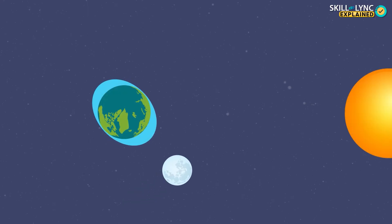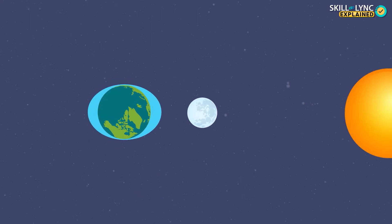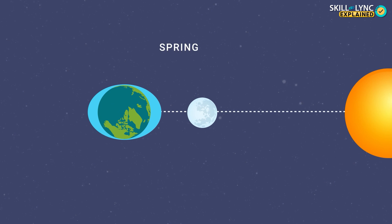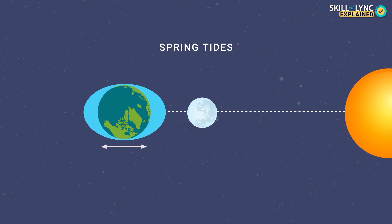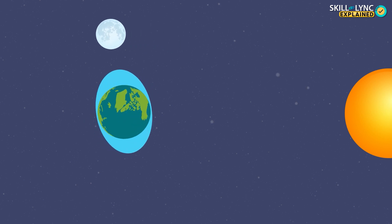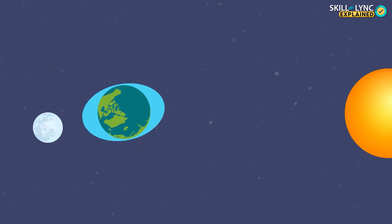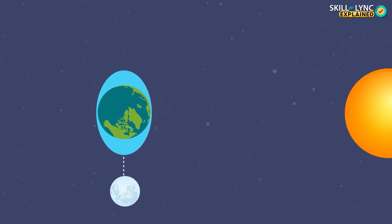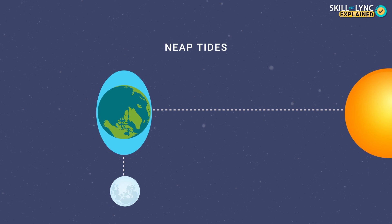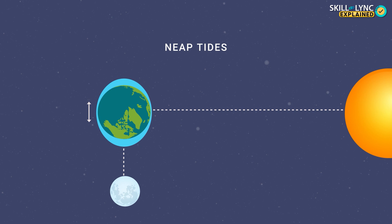When the earth, the moon and the sun line up — on new moon and full moon days — the gravitational forces of the sun and the moon combine and we experience spring tides, wherein the high tides are at their highest and the low tides are at their lowest. But on half moon days, the moon's gravity and the sun's gravity pull in different directions, and we experience neap tides, wherein the tidal range is at its lowest.